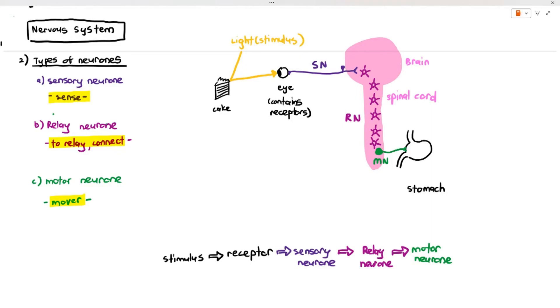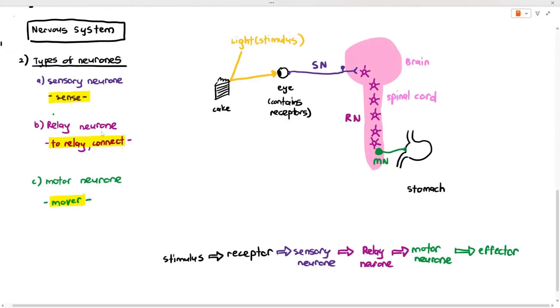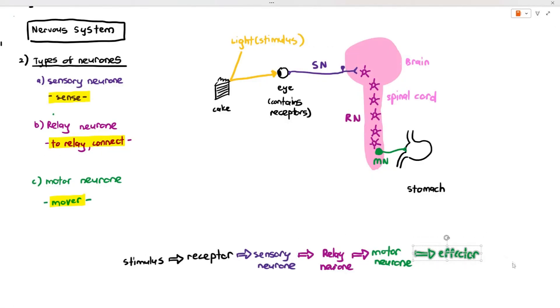Once the signal reaches the motor neuron, the motor neuron sends the signal to the stomach, which is known as the effector. The effector is that part of the body that will produce the response. In this case, when you see cake, your stomach will growl and produce gastric juice.